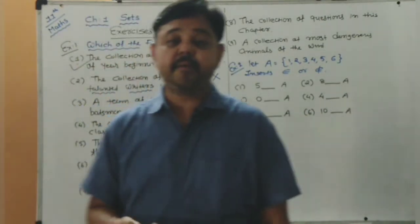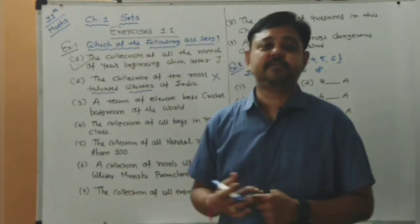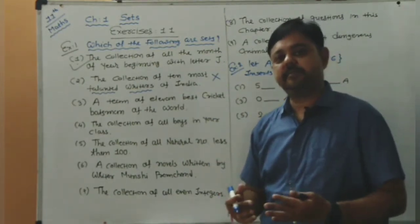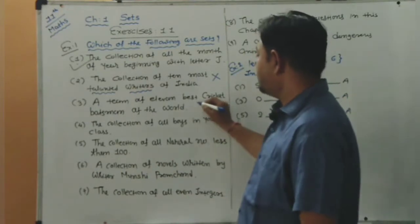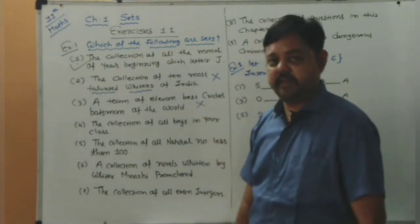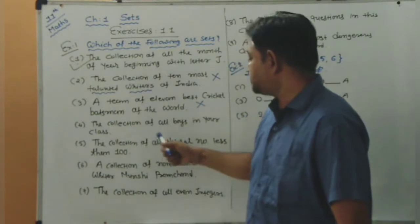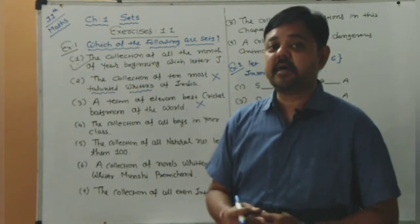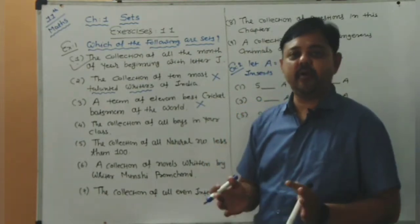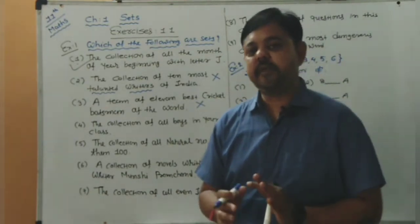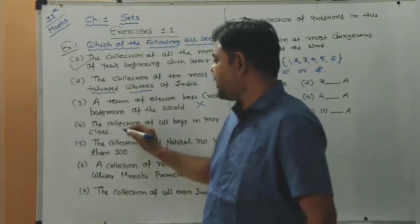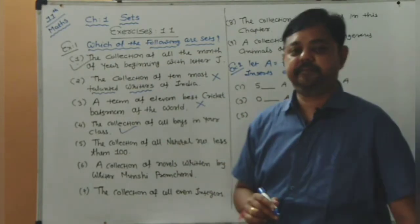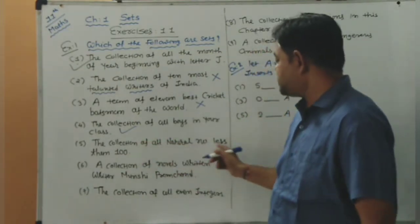For the cricket batsmen question, the answer is dependent on the person — every person's answer will be different, so this is also not a set. Next: the collection of all boys in your class. Whoever from your class makes this collection, the result will be the same — these are specific objects. That is a set.